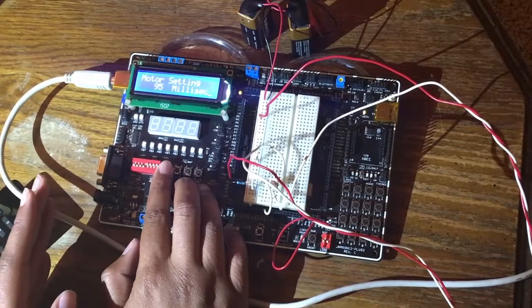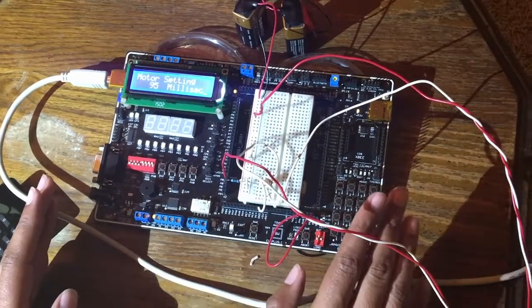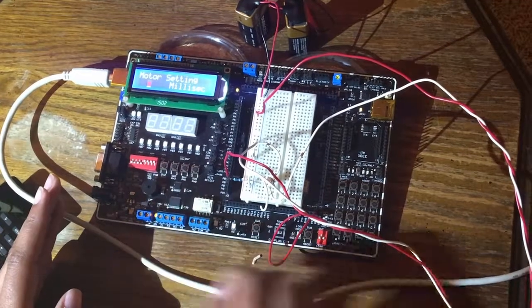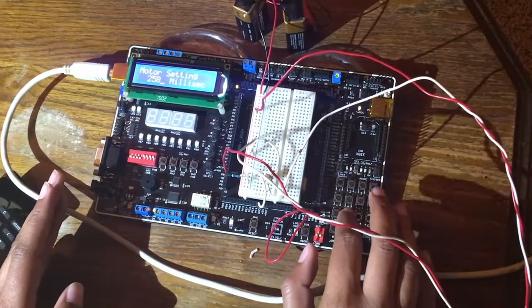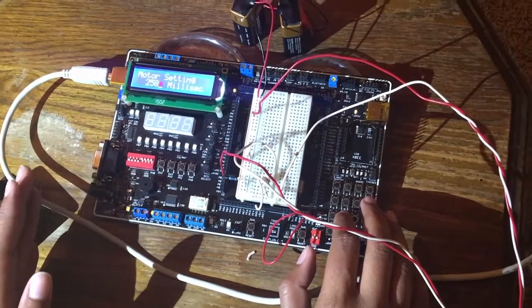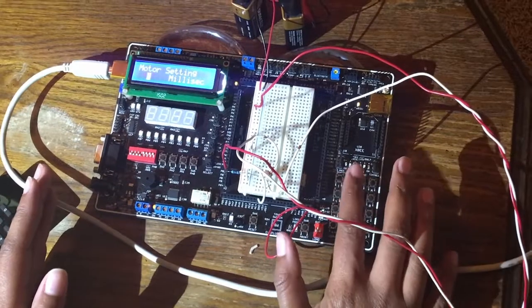Now we're gonna go to the next setting. Next setting is the motor setting. Say we want to change that again, so you press the second button and then we press numbers over here, so two five eight. Now let's say you didn't want those numbers, so you press A to reset the numbers and you press these numbers again, so one four seven, and then you press star to save that.